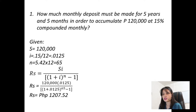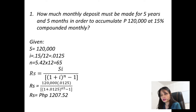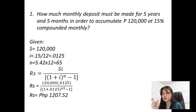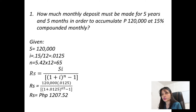Why is $120,000 equal to S — the final amount? Because according to the problem, the goal is to accumulate $120,000. Because of the word 'accumulate,' $120,000 is your amount. We also have I, the periodic rate: 0.15 divided by 12, which gives 0.0125.